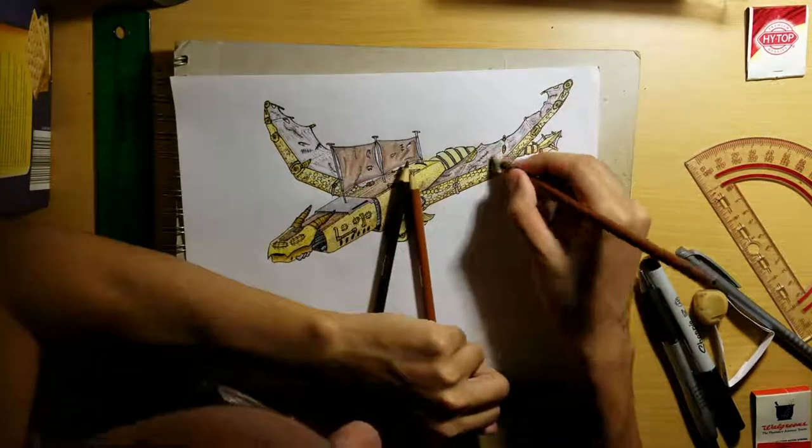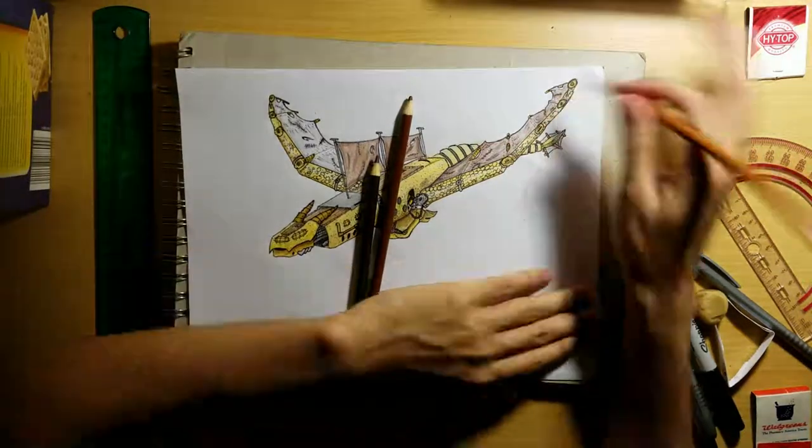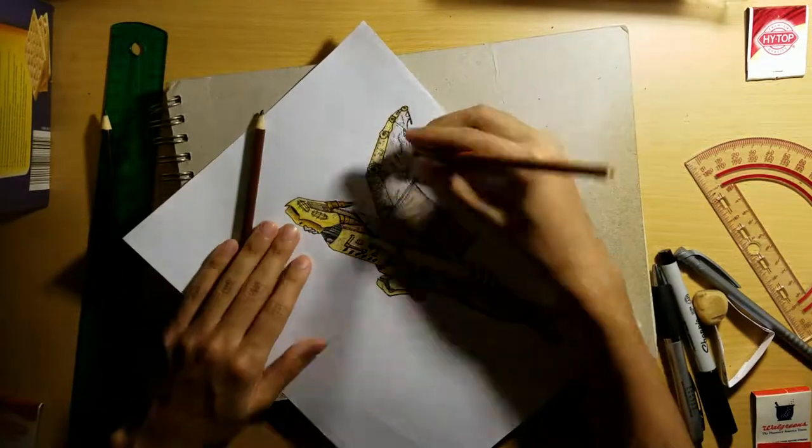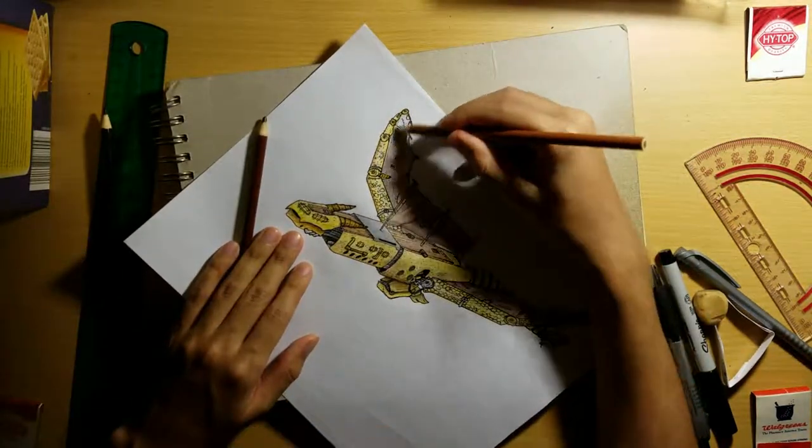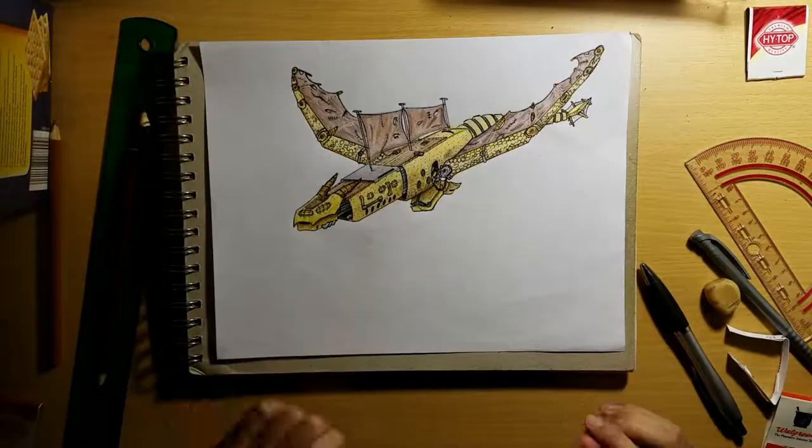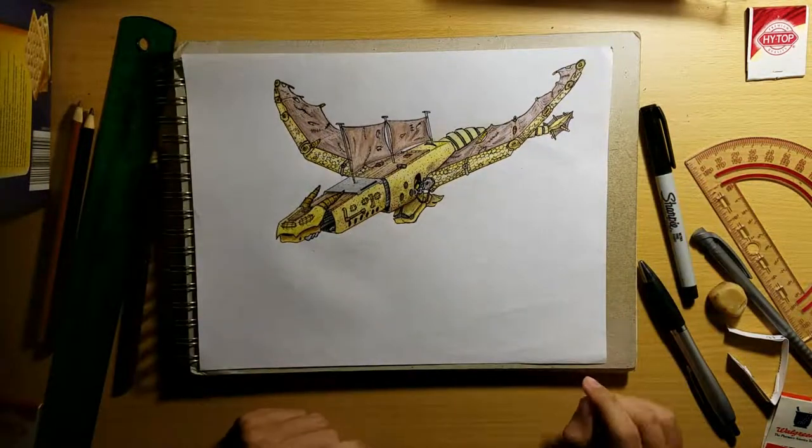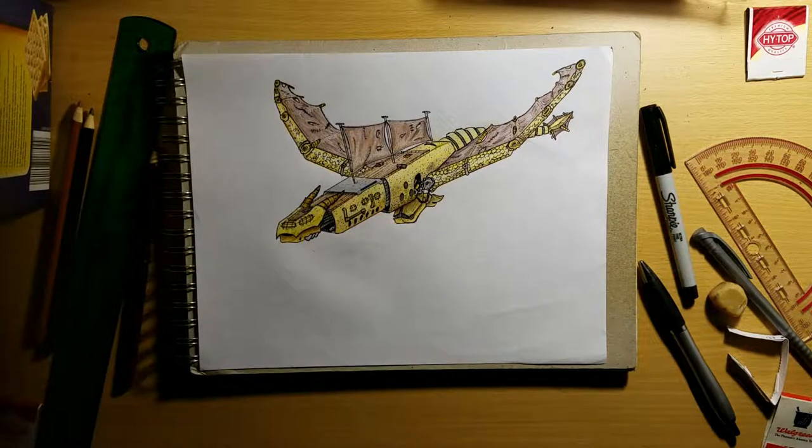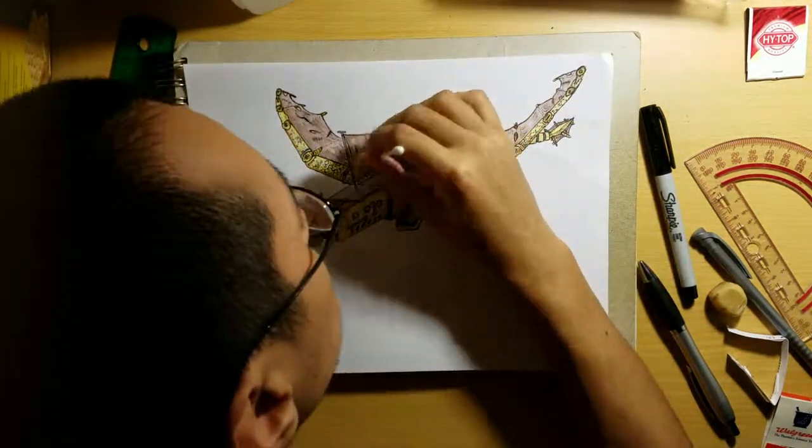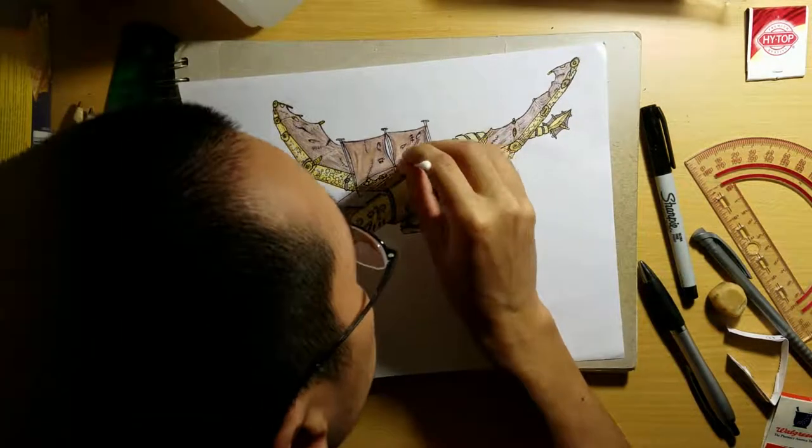And for anyone wondering out there, I use Crayola student grade color pencils, nothing fancy. Like, a $6 pack you could probably get somewhere. Nothing fancy at all. And so I start doing the same exact thing to the wings, which is the very dark brown for just shading, then brown for the base, and then highlighting the middle sections with the light brown.